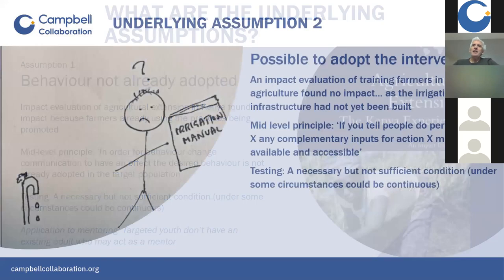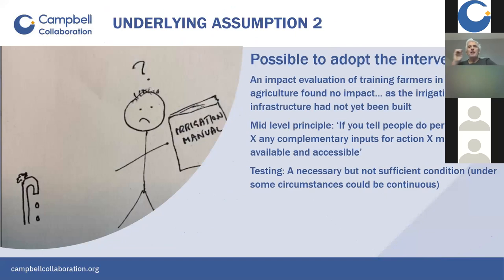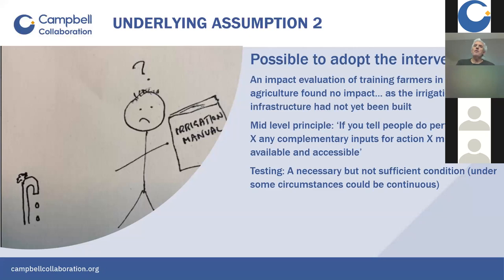The second assumption is that it's possible to adopt the intervention. An impact evaluation of a training programme for farmers in Armenia to use irrigated agriculture had no effect because the irrigation infrastructure hadn't been built — you're training farmers to use irrigation, but there was no irrigation available. The mid-level principle is that any complementary input necessary to perform an action must be available and accessible. In the mentoring example, if a mentor promotes better school engagement, the school needs to be open to respond to those efforts.